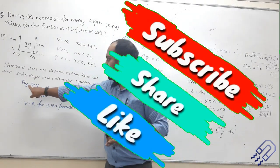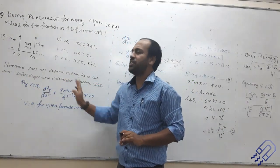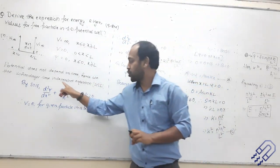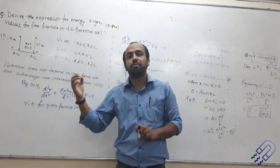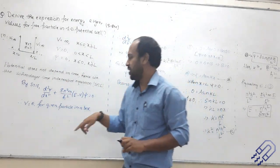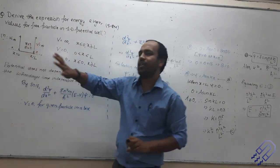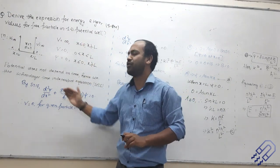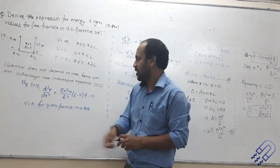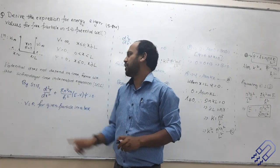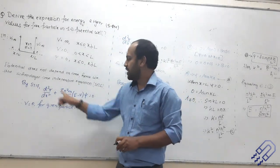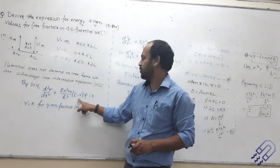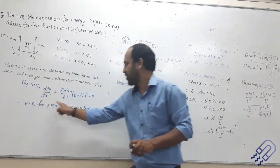So the result we have derived — Schrödinger's time-independent equation — is important to remember. The equation written in short form is: d²ψ/dx² + (8π²m/h²)(E − V)ψ = 0. You should remember this equation because whenever we analyze a system, I need to know these equations. This is the general Schrödinger's time-independent equation.